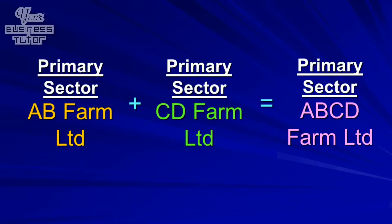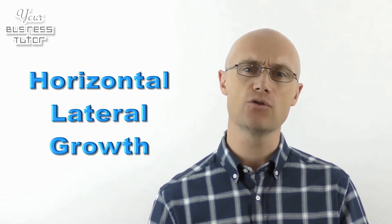For example, when two businesses from the primary sector join together using a merger or a takeover. Generally, horizontal growth will occur between two organizations which undertake the same activities, for example if two crop farmers join together. However, if the horizontal integration is between two organizations which are connected but don't do the same thing, this would be called horizontal lateral growth — for example, if a crop farmer were to join together with an animal farmer.